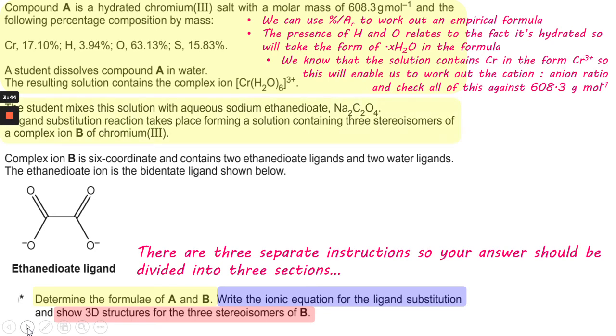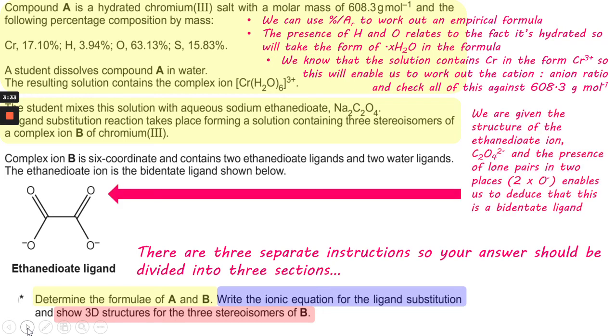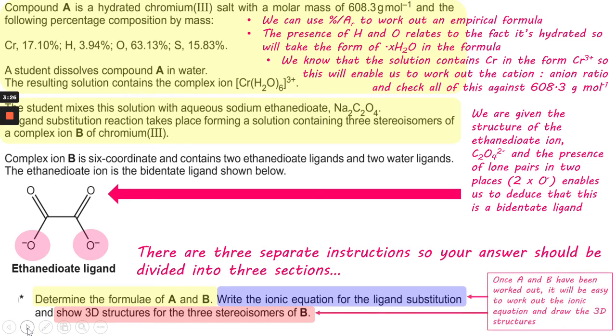Let's look at the next part where it gives us aqueous sodium ethanedioate, Na₂C₂O₄, and the structure of that particular ion. You can see there are two places where there are lone pairs, so therefore it's going to be a bidentate ligand. Once we've done that part, we can do the following parts—the ionic equation and the 3D structures—quite straightforwardly.